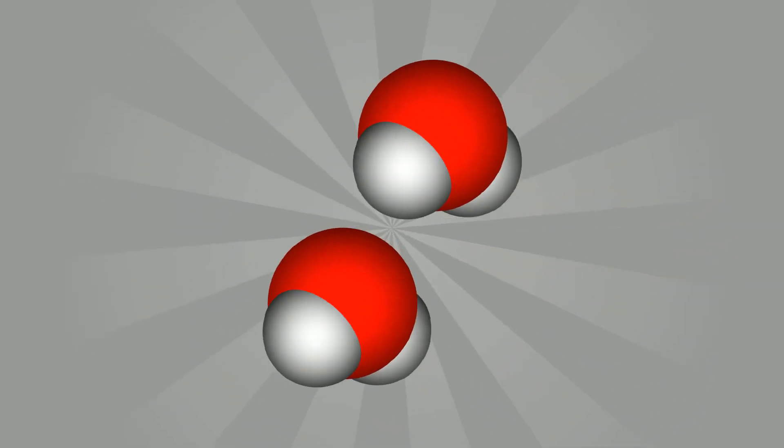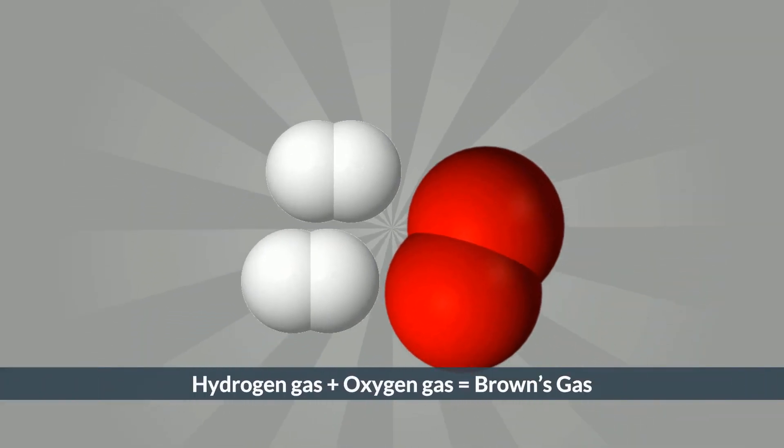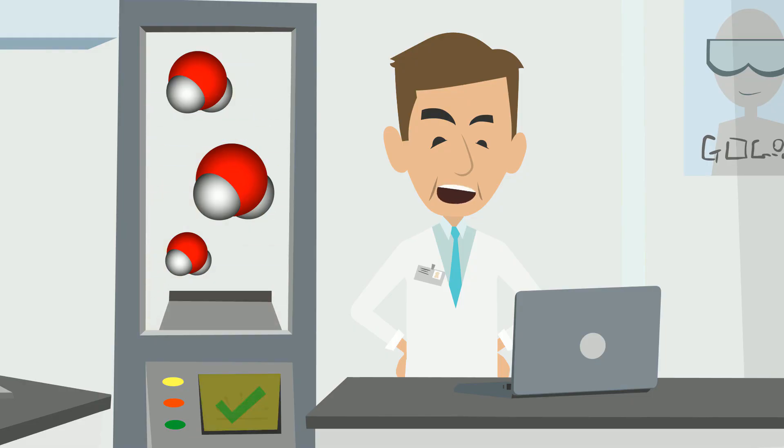Water is broken down via electrolysis into its elements of hydrogen and oxygen. Hydrogen gas plus oxygen gas equals brown's gas. Brown's gas has more than three times the power of gasoline by weight, yet burns completely because it is a gas, not a liquid.